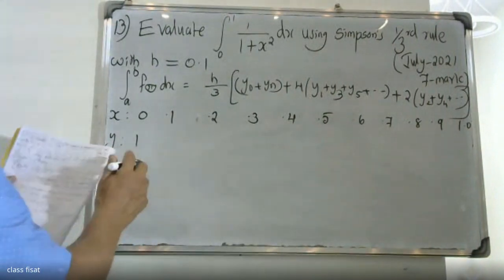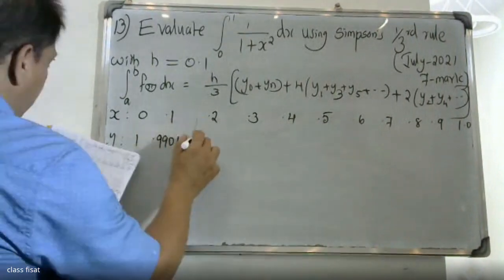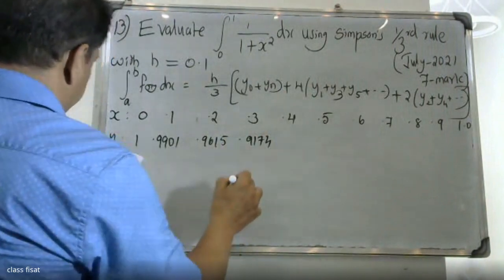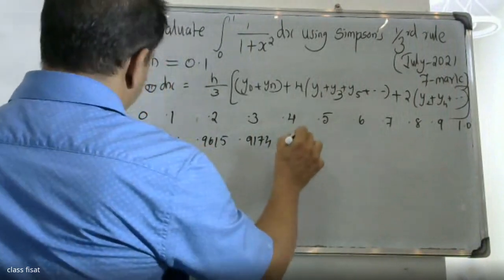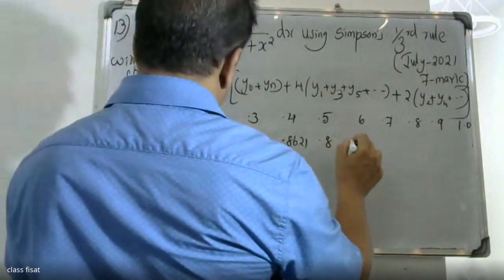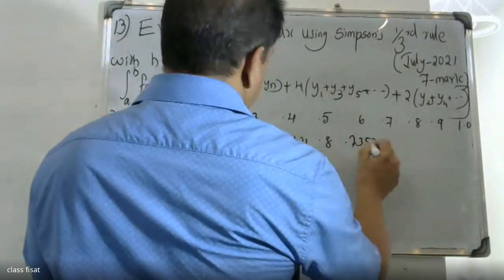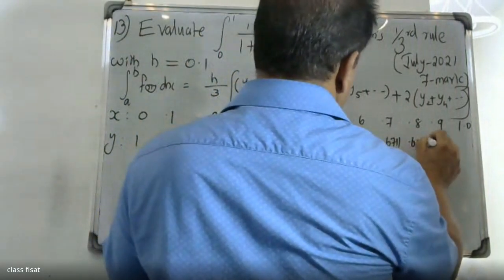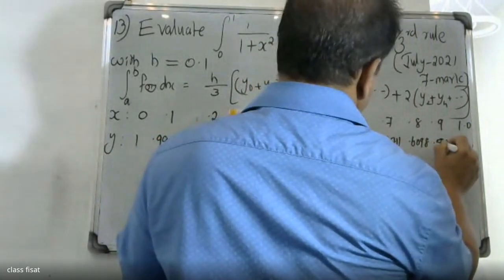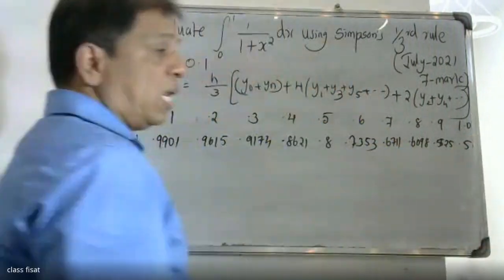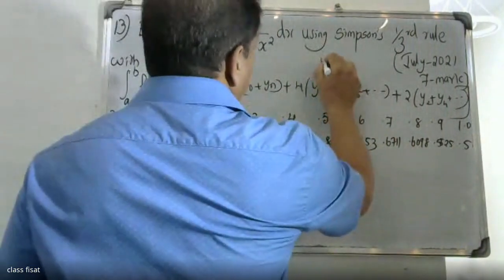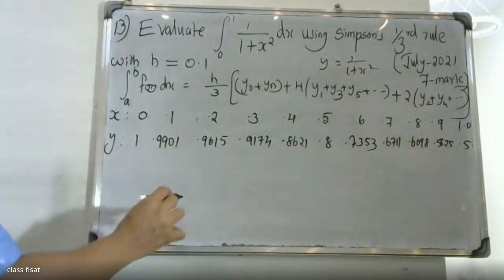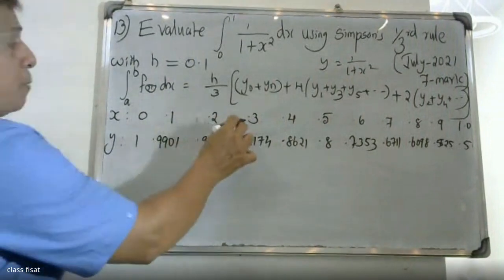The function values are: y0 = 1.0, y1 at x=0.1 is 0.9901, y2 at x=0.2 is 0.9615, y3 at x=0.3 is 0.9174, y4 at x=0.4 is 0.8621, y5 at x=0.5 is 0.8, y6 at x=0.6 is 0.7353, y7 at x=0.7 is 0.6711, y8 at x=0.8 is 0.6098, y9 at x=0.9 is 0.5525, and y10 at x=1.0 is 0.5.